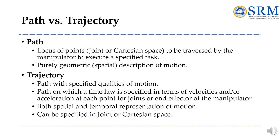Next is the difference between path and trajectory. A path defines a sequence of robot configurations in a particular order without regard to the timing of these configurations, whereas a trajectory is concerned about when each part of the path must be attained — it specifies the timing. Path purely describes the geometric description of motion, while trajectory represents both spatial and temporal representation of motion. The trajectory can be specified in terms of velocities or acceleration at each point for the joints of the manipulator.